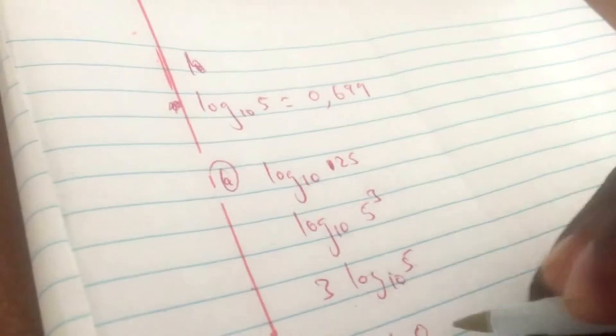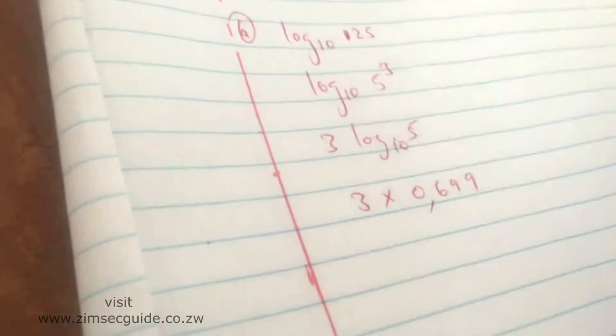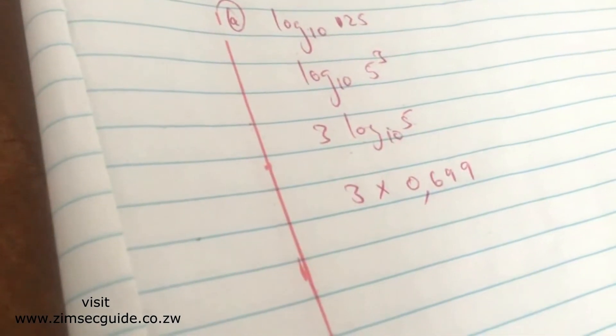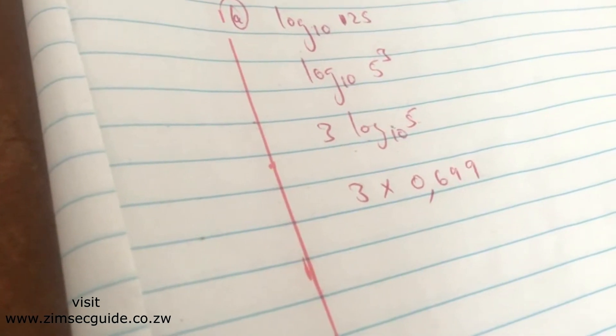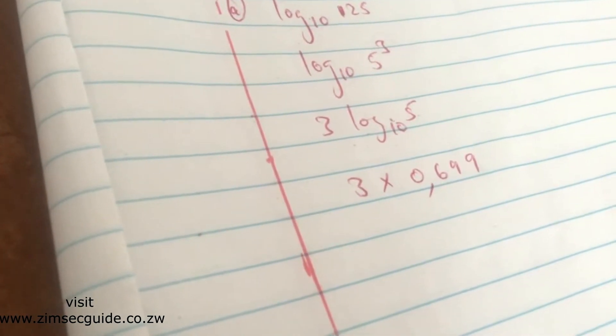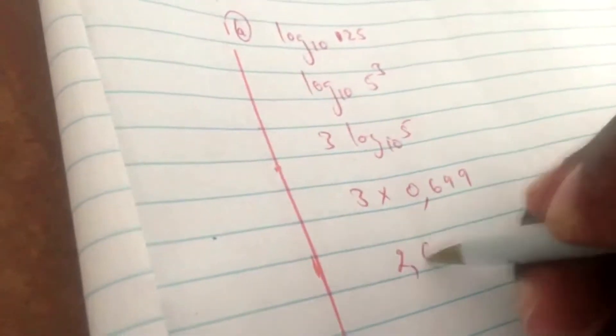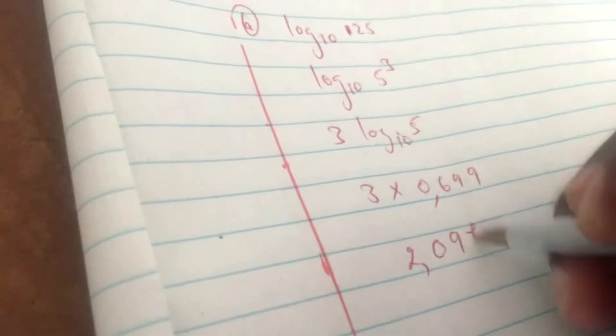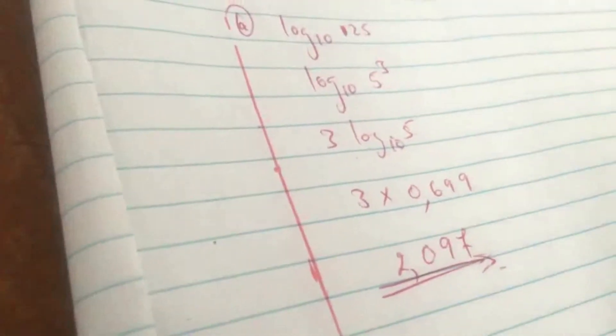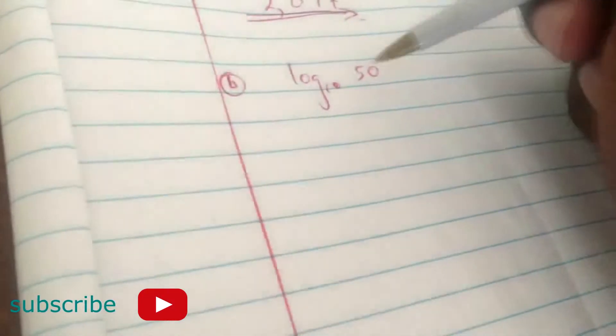So this is simply 3 multiplied by 0.699. So you have 3 by 0.699, so that you get 2.097. So that will be the answer there. And then part b, you have log base 10 of 50.